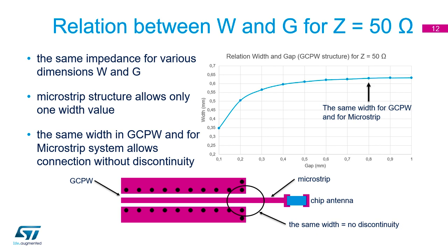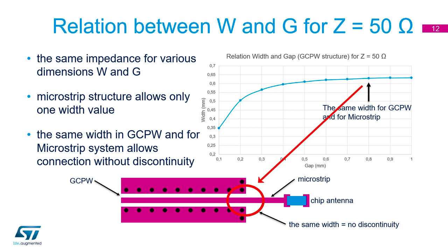It is possible to define the same impedance for various combinations of width and gap, as shown in the chart. You can keep the same gap between trace and ground, or preserve the same width of trace when changing impedance, for example as required by the IPD. In a microstrip structure only one width value is possible — in this example it equals 0.63 mm. Sometimes it is advantageous to define the GCPW RF track dimensions to match the same width as the microstrip, allowing a track without discontinuity when switching to the microstrip leading to the antenna.